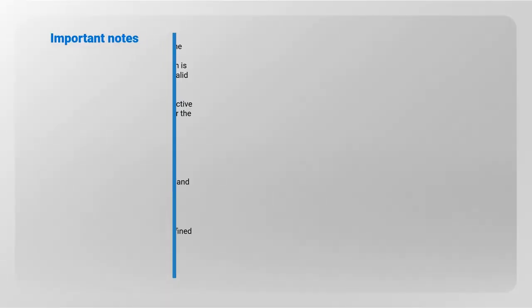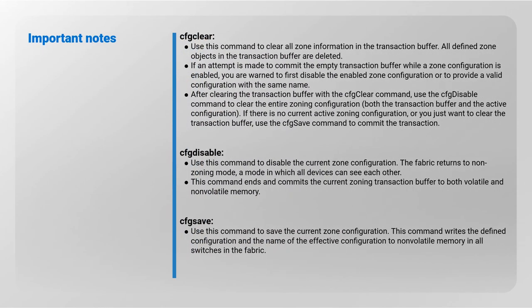Important notes — cfg clear: use this command to clear all zone information in the transaction buffer; all defined zone objects in the transaction buffer are deleted. If an attempt is made to commit the empty transaction buffer while a zone configuration is enabled, you are warned to first disable the enabled zone configuration or to provide a valid configuration with the same name. After clearing the transaction buffer with cfg clear, use cfg disable to clear the entire zoning configuration — both the transaction buffer and the active configuration.